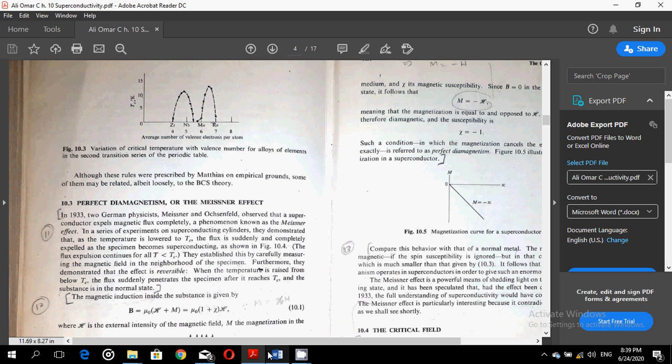The flux expulsion continues for all temperatures less than Tc. They established this by carefully measuring the magnetic field in the neighborhood of the specimen. Furthermore, they demonstrated that the effect is reversible. When the temperature is raised from below Tc, the flux suddenly penetrates the specimen after it reaches Tc, and the substance is in the normal state. So this is the well-known Meissner effect.